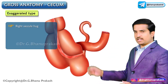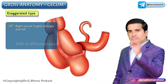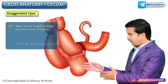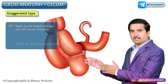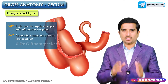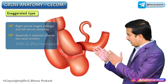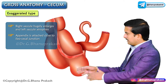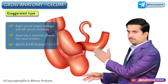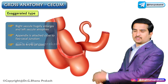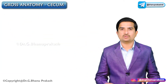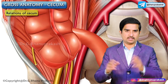The fourth type is the exaggerated type, where the right saccule hugely enlarges and the left saccule atrophies. The appendix is attached close to the ileocecal junction, and this type is seen in approximately 4 to 5% of cases. Now let us discuss the relations of the cecum.